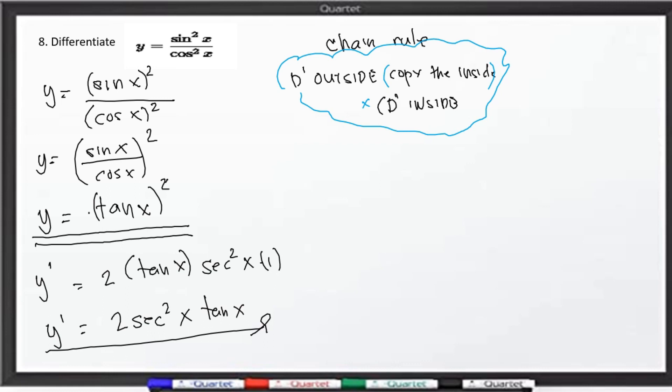Siguro po sapat na po, ang isa pang halimbawa ay sapat na para ma-cover po natin itong ating trigonometric functions. Dahil na meron na po tayong quotient, meron na po tayong direct substitution, meron na po tayong product rule, meron na po tayong sum. So I think one last example will be sufficient enough to cover all the things that you need to know in dealing with derivatives of trigonometric function.